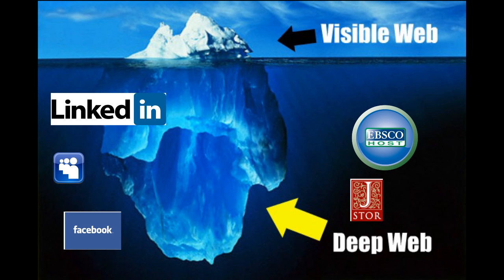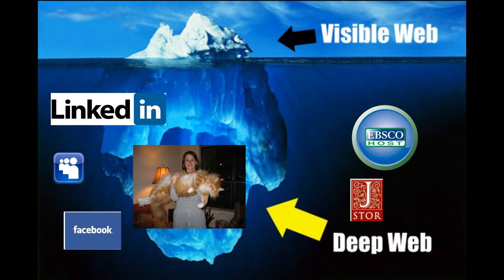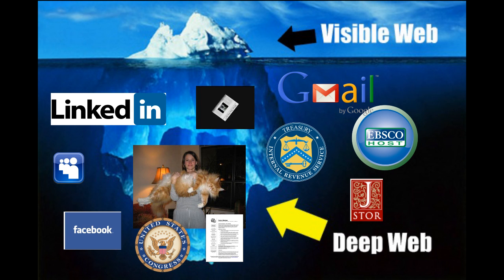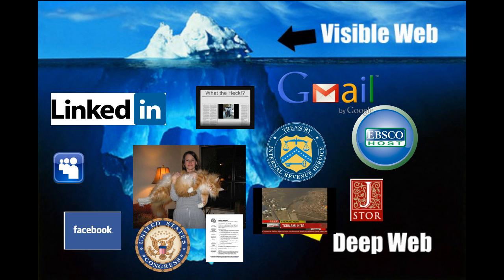Think of that resume link on your personal website or blog — anyone can download it, but only if you give them the link. Fourth, private web: websites which you need to log into and are secured. Think of your Gmail account and all the files with it. Fifth, real-time content: live streams and feeds by their very nature cannot be indexed.